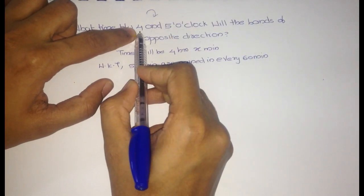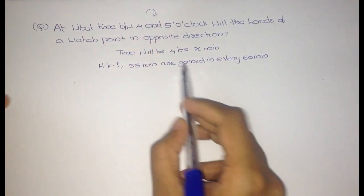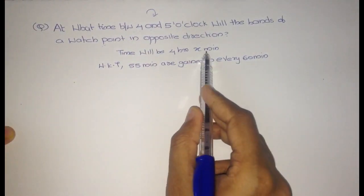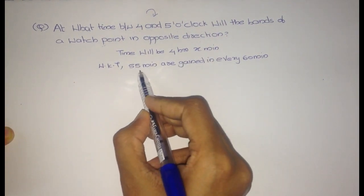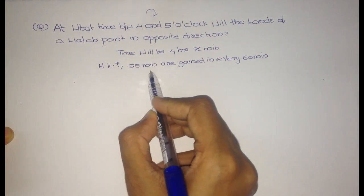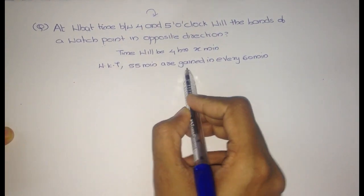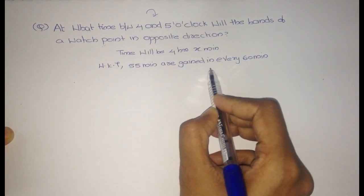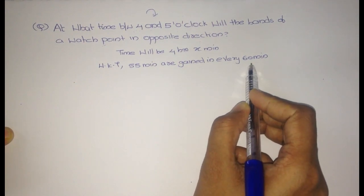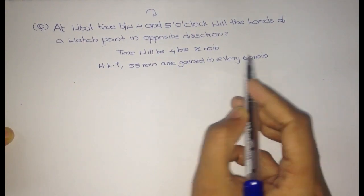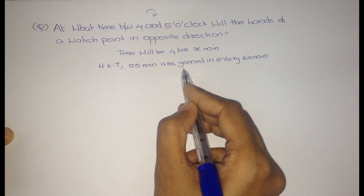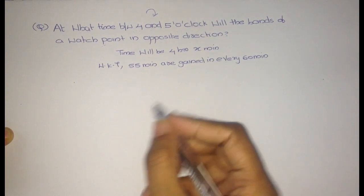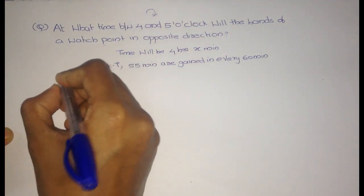So we have to take from 4, so it is 4 hours X minutes. We all know that 55 minutes are gained by the minute hand in every 60 minutes. This should be understood initially.